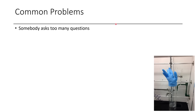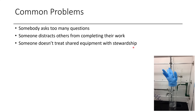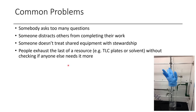Here are some common problems you'll encounter working in a lab. Someone will ask too many questions and not be independent enough. Someone will distract others from completing their work — just talking their ear off for hours. Someone doesn't treat shared equipment with stewardship: leaving the rotovap dirty, making a mess of shared lab space, or contaminating equipment. Another thing people do is exhaust the last of a resource — the last TLC plate, the last bit of solvent — without checking if anyone else needs it or making sure it gets replaced. Most of the time this can be mitigated with planning and communication.